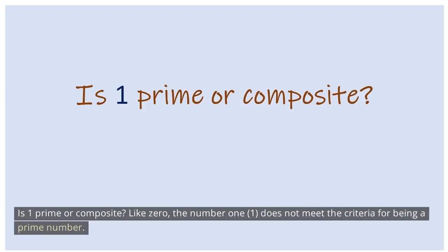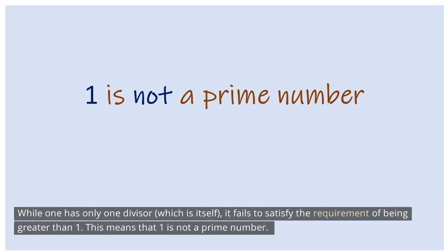Like 0, the number 1 does not meet the criteria for being a prime number. While 1 has only one divisor, which is itself, it fails to satisfy the requirement of being greater than 1. This means that 1 is not a prime number.